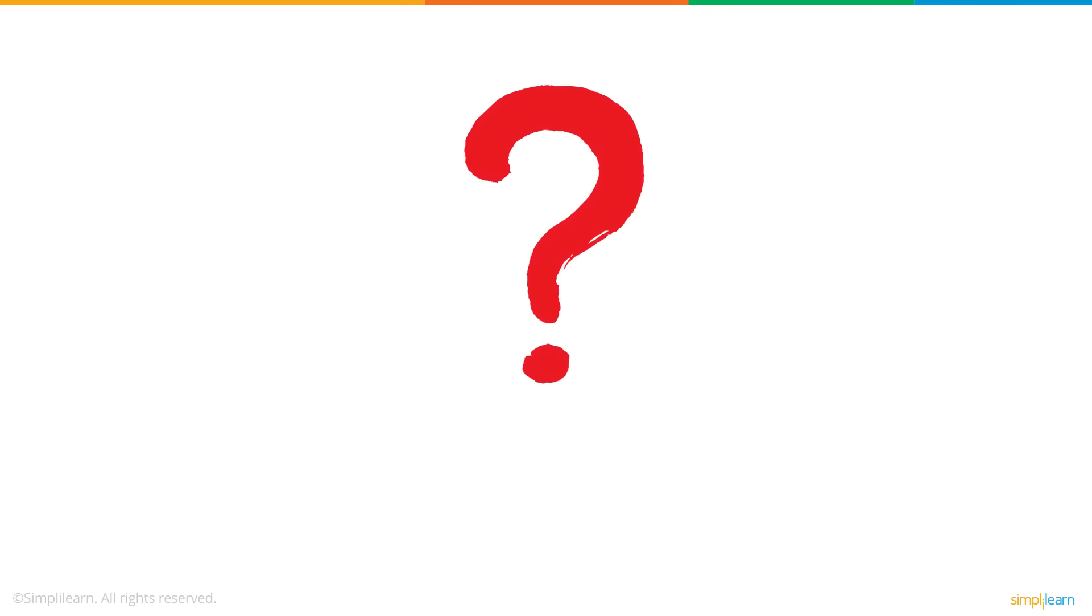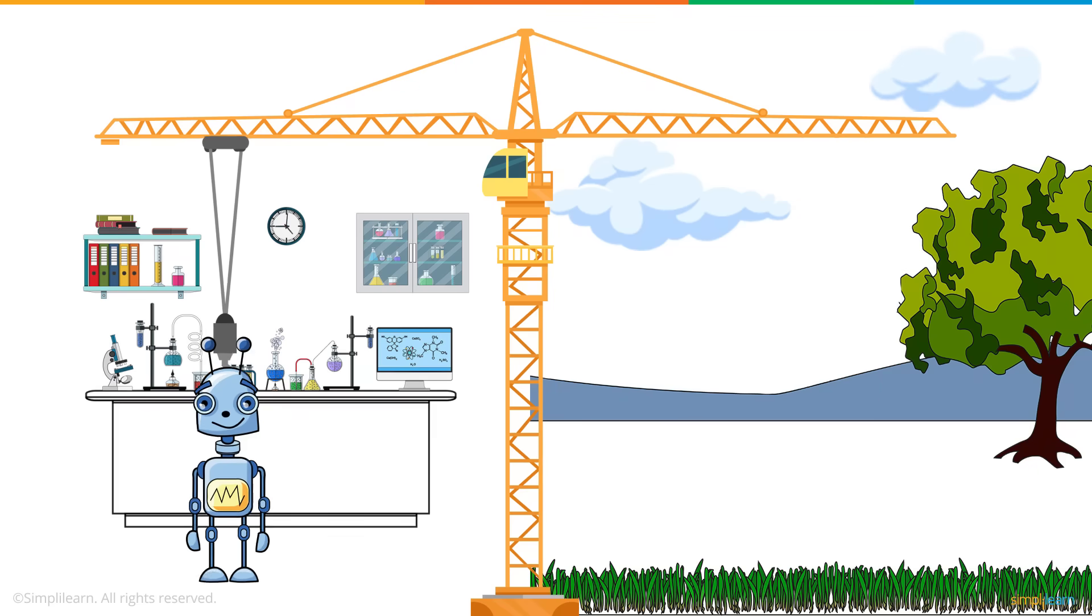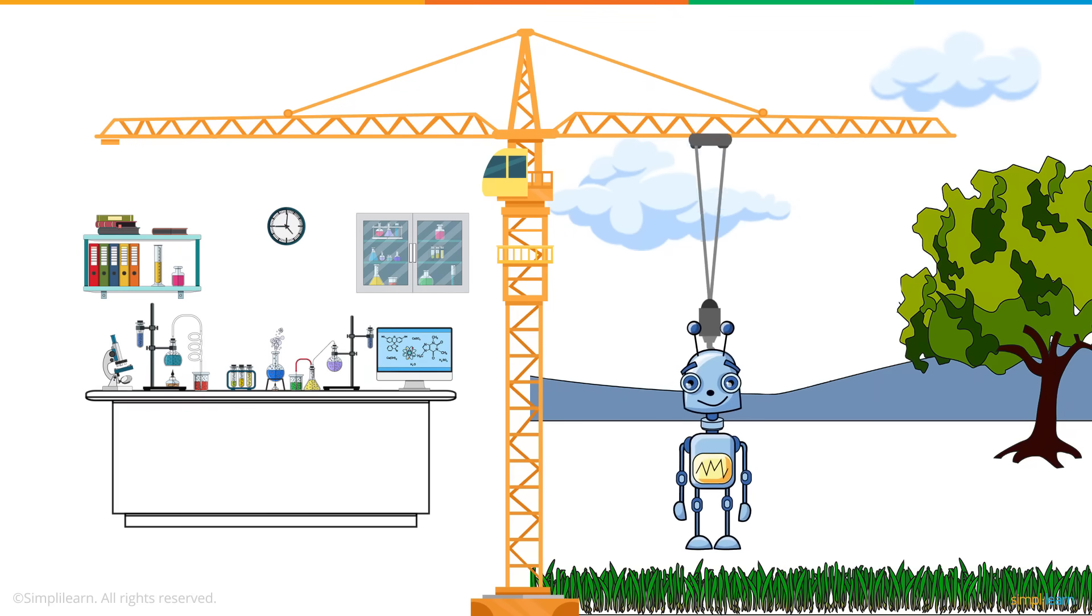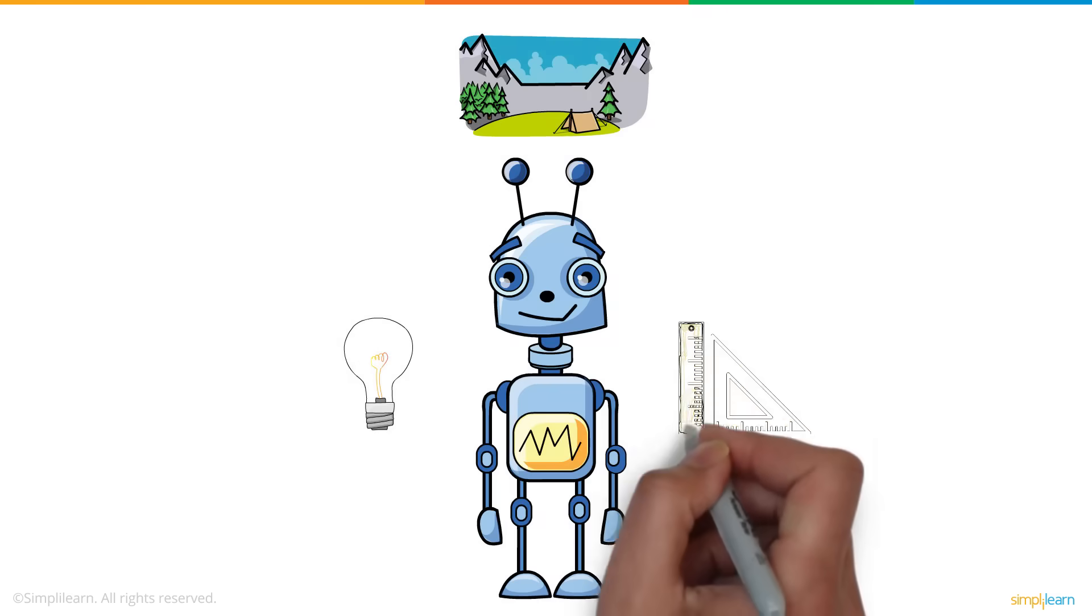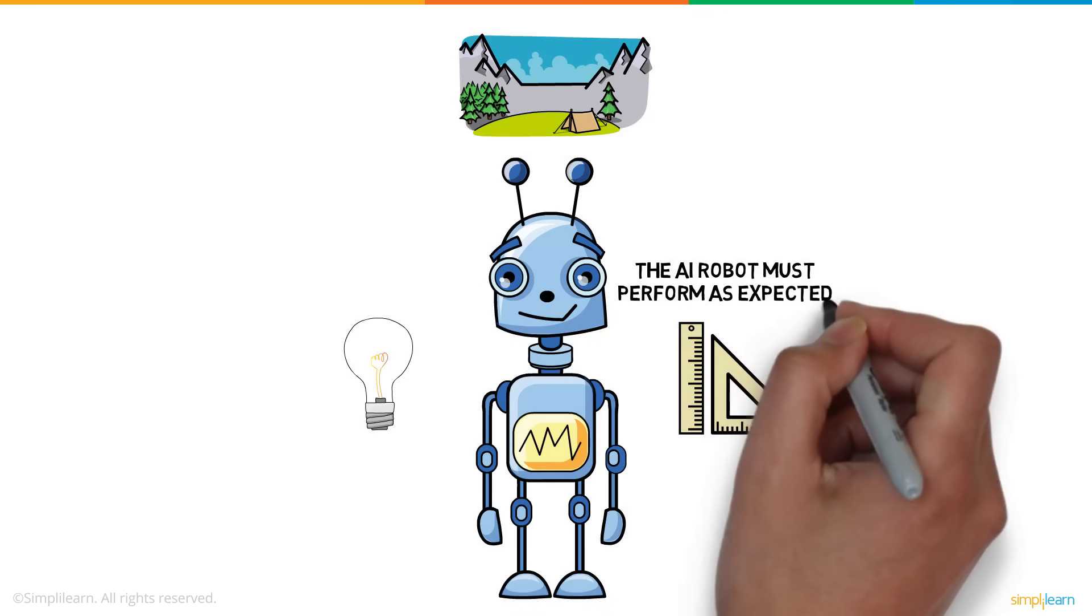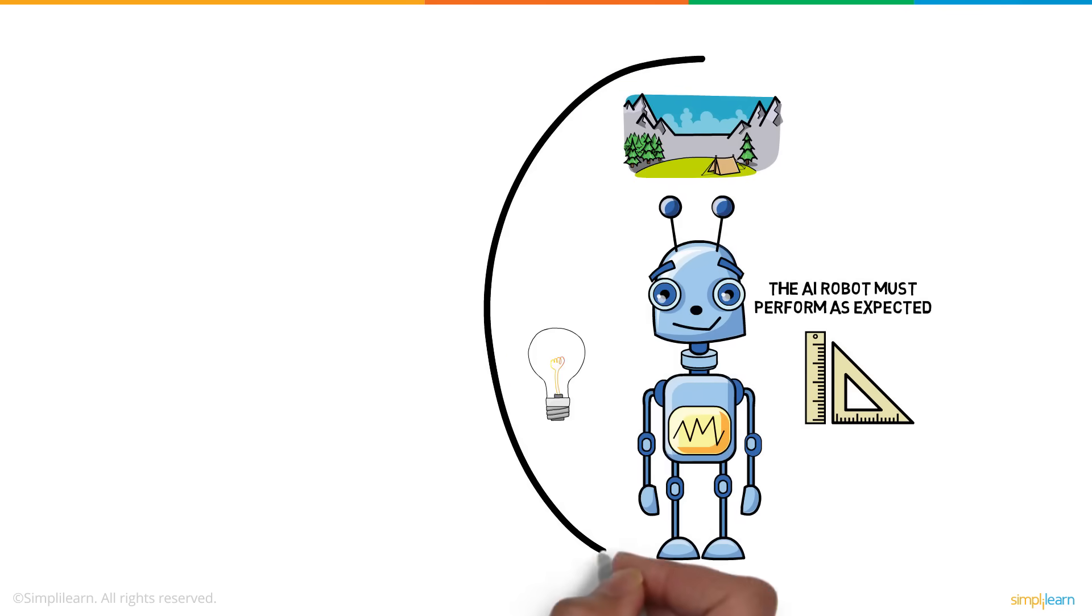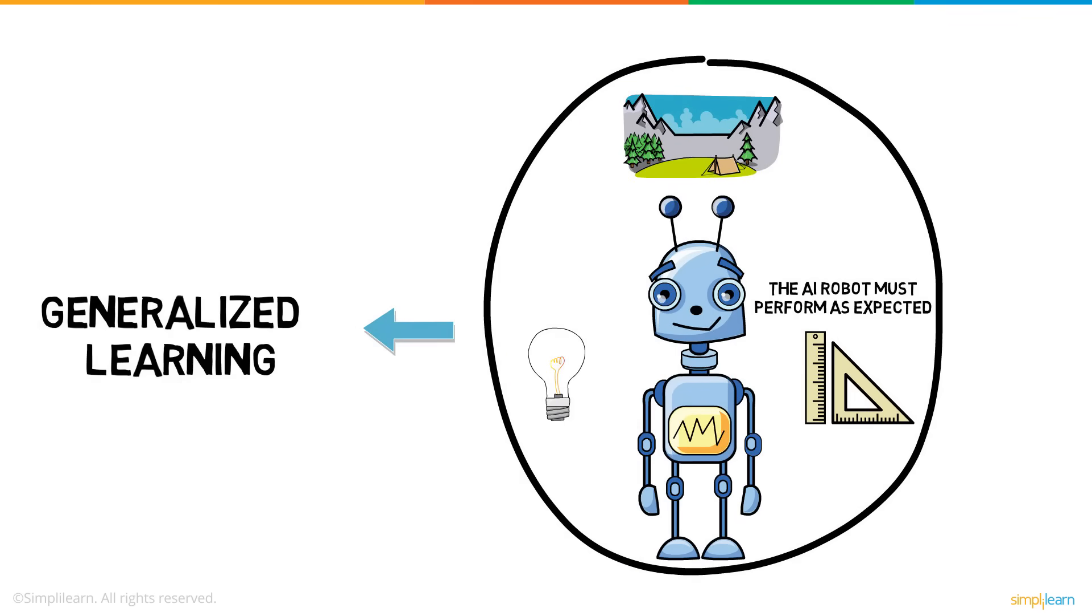The real question is, what does an AI do at its core? Here is a robot we built in our lab, which is now dropped onto a field. In spite of a variation in lighting, landscape, and dimensions of the field, the AI robot must perform as expected. This ability to react appropriately to a new situation is called generalized learning.